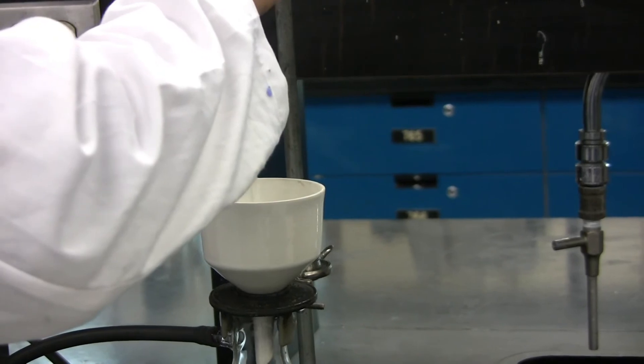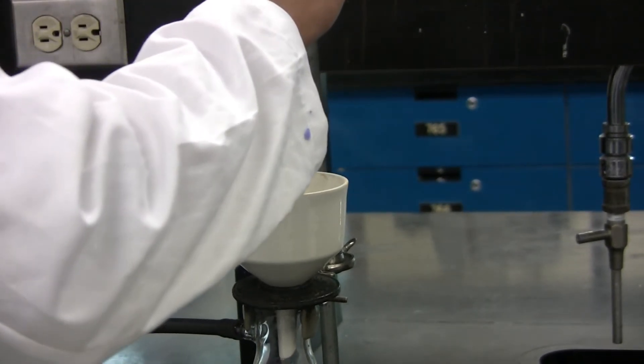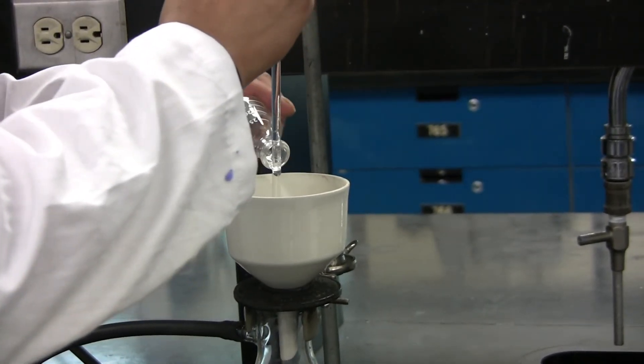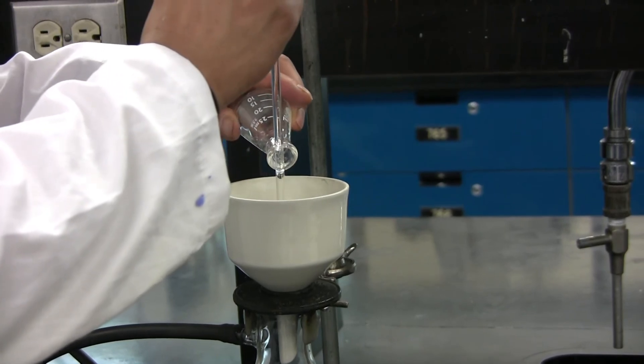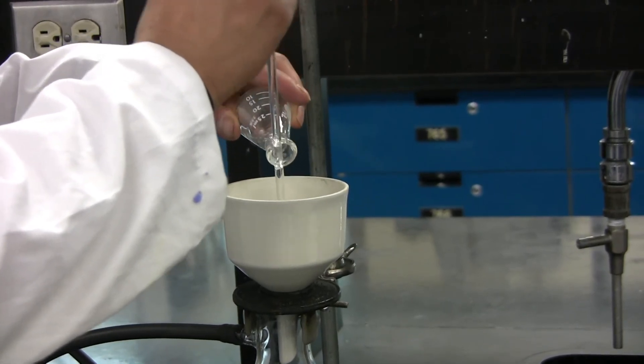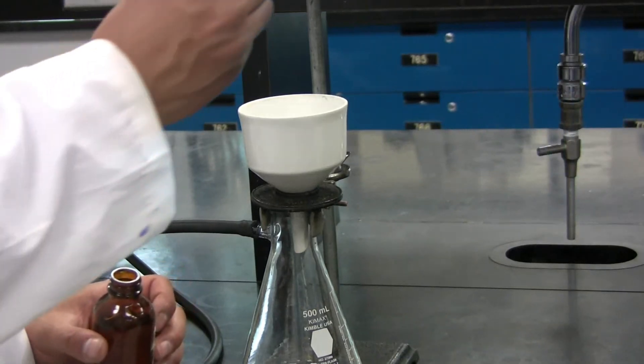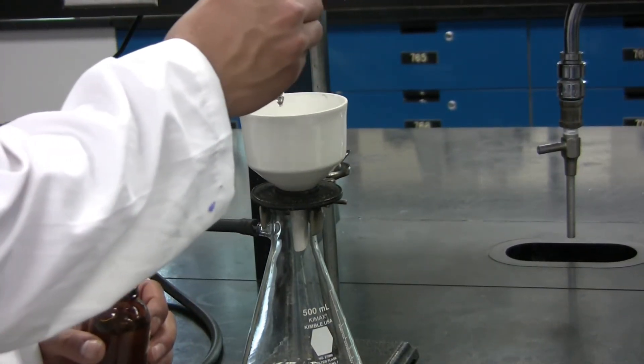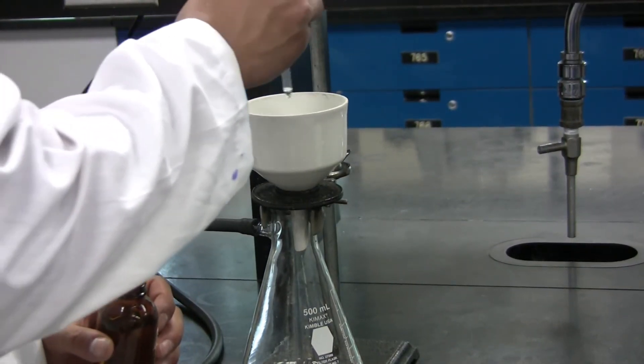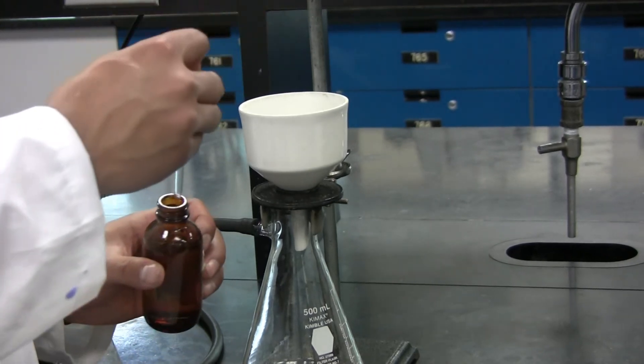Again, using the Glass Stir Rod, ensure that all the Crystals pile around the middle of the Filter Paper. If time is sparing, you need to rinse off your Crystals using your Cold Solvent. This will remove any impurities trapped on them.